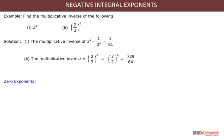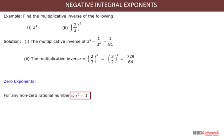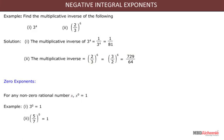Zero exponents: for any non-zero rational number x, x to the power 0 is equal to 1. Here are some examples of zero exponents.